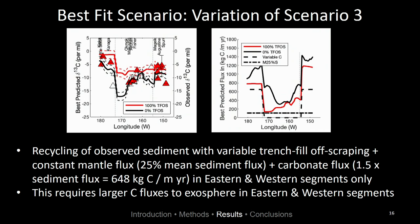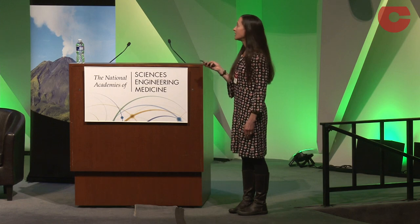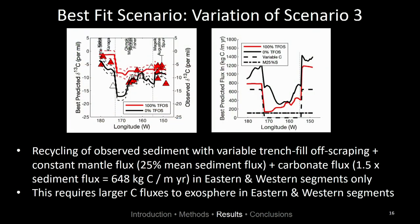Our best fit scenario has recycling of the observed sediment with variable trench fill off-scraping, a constant mantle flux equal to 25 percent the mean sediment flux, and a carbonate flux only in the eastern and western segments equal to 1.5 times the sediment flux — about 648 kilograms carbon per meter per year. One other interesting observation is that the flux of carbon corresponding to this mixing model shows a higher carbon flux in both the western and eastern segments than the central part of the arc.